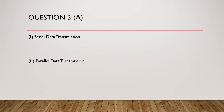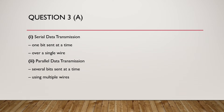Question number 3: Explain what is meant by, firstly, serial data transmission, and secondly, parallel data transmission. Serial data transmission is one where one bit is sent at a time over a single wire. Parallel data transmission is one where several bits are sent at a time using multiple wires.